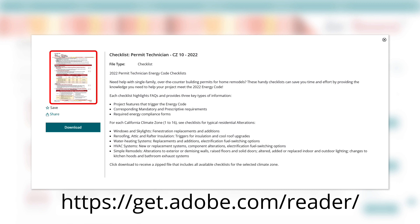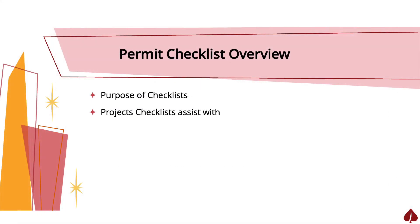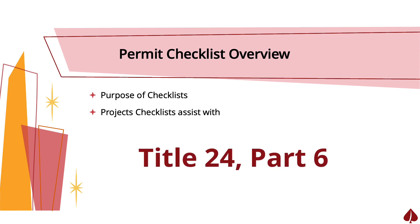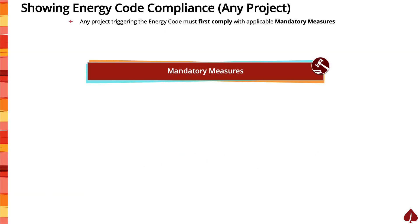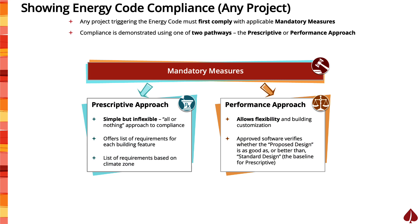Now that you know where to find the checklists, let's talk more about their purpose and the types of projects they can assist you with. The Permit Technician Checklists focus on the 2022 Energy Code. This set of building energy efficiency standards is also called Title 24 Part 6 and is updated by the California Energy Commission every three years. If a home project triggers the Energy Code, its proposed design and construction must demonstrate compliance with energy efficiency standards. There is a set of requirements called mandatory measures — they must always be met or exceeded, regardless of the chosen compliance pathway. The Energy Code allows for two options for demonstrating compliance: the prescriptive approach and the performance approach.